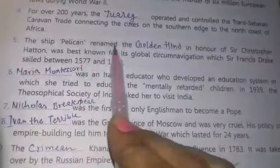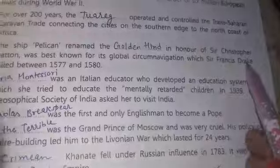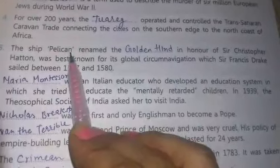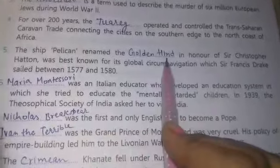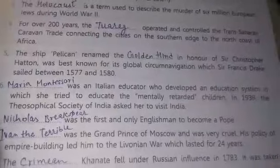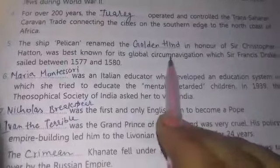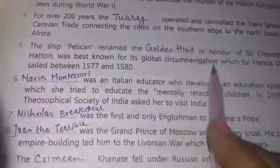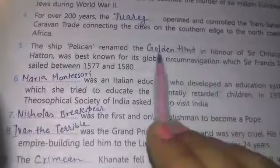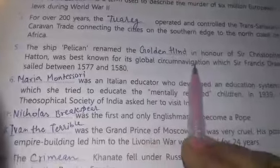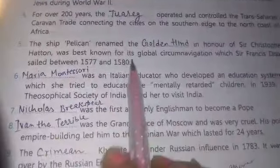The ship Pelican was renamed the Golden Hind in honor of Sir Christopher Hatton. He was best known for his global circumnavigation — meaning he journeyed by ship across all the oceans and continents — with Sir Francis Drake, who sailed between 1577 and 1580.